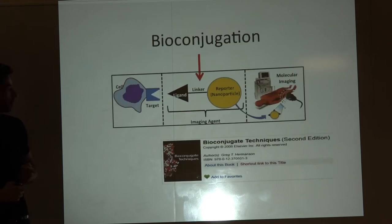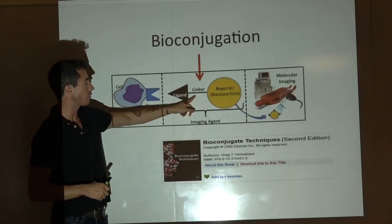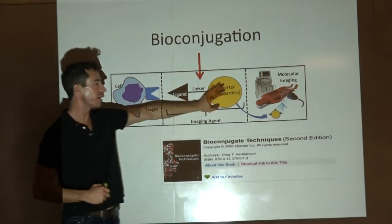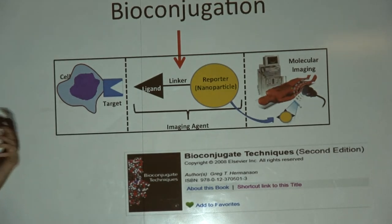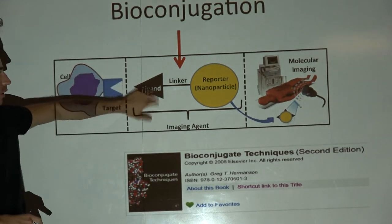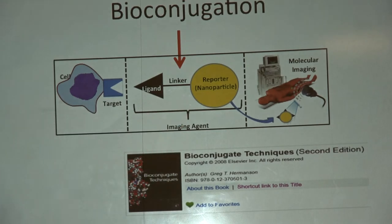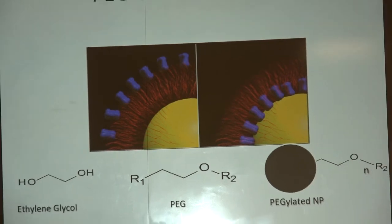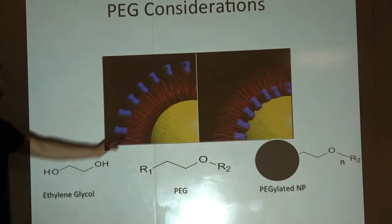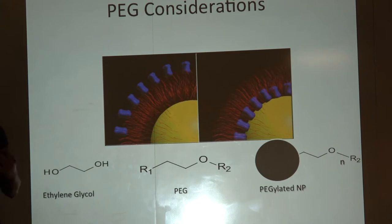So reminder, we're talking about bioconjugation. Not the chemistry where we make the nanoparticle, not the chemistry where we create some targeting ligand, but the chemistry of putting these two things together. We talked about why it's important to consider polyethylene glycol to increase circulation time and monodispersity of the particle.